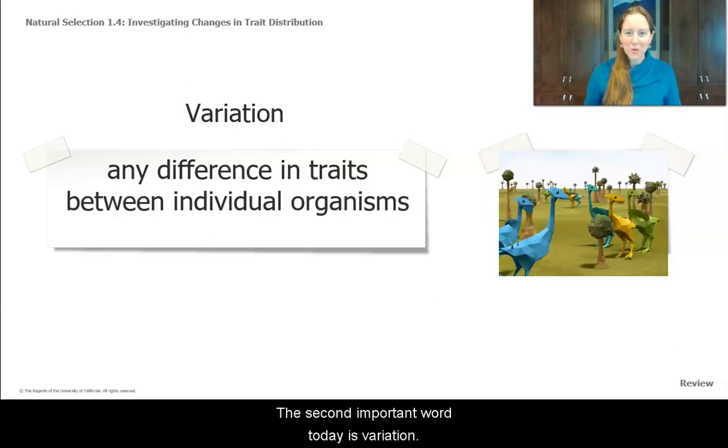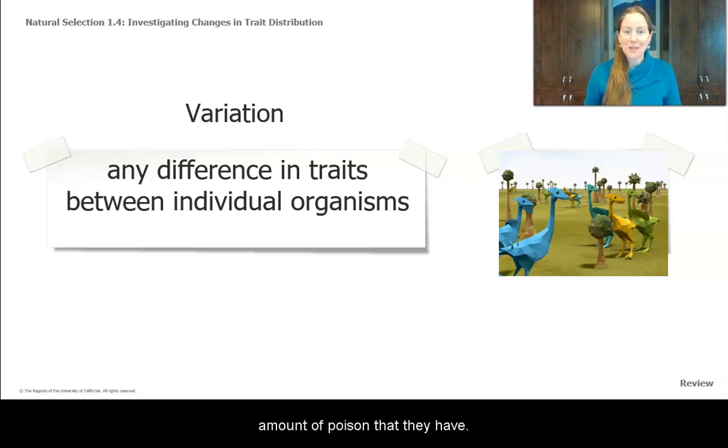The second important word to review is variation. Variation is any difference in traits between individual organisms. We looked at australopes and we found that they have variation in things like their neck length, their color, their amount of fur. Rough-skinned newts have variation in their size and the amount of poison that they have.